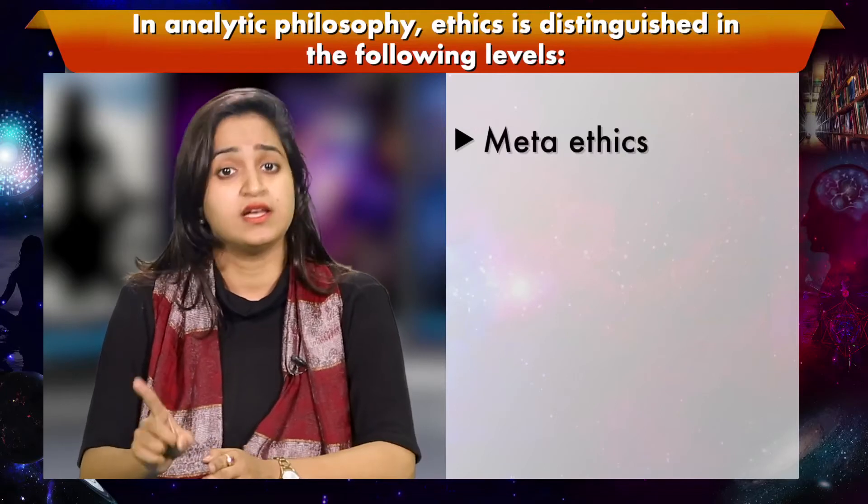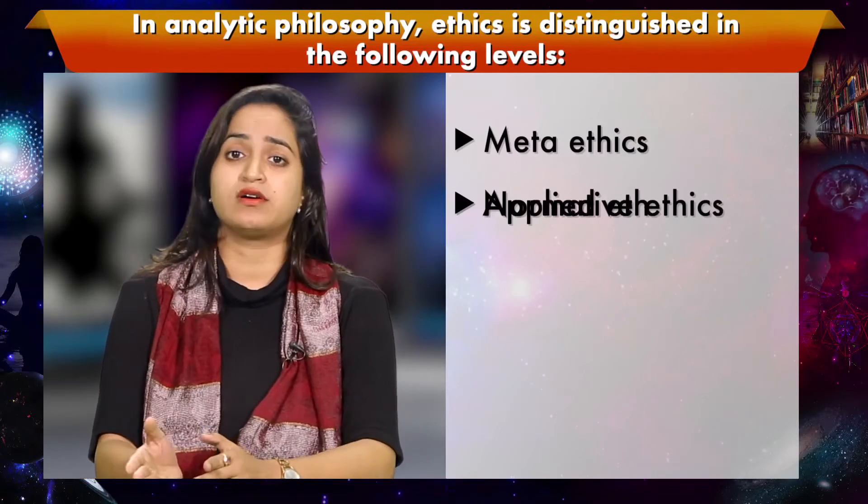It is beyond the scope of this module to discuss every aspect of the concern issue. However, an attempt will be made to make it as inclusive as possible. In analytic philosophy, ethics is distinguished at the following levels: first, metaethics; second, normative ethics; and third, applied ethics. Generally speaking, normative ethics involves specific positions concerning how to act, what ought and what ought not to be done, what is right and wrong and so on.